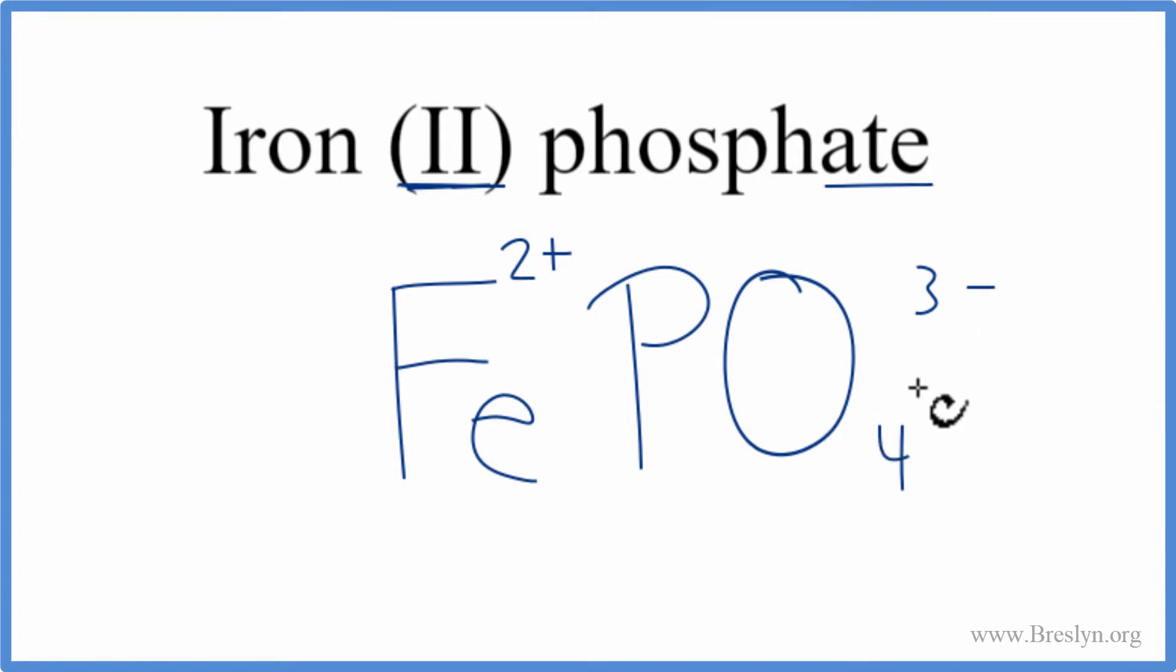These need to add up to zero, give us a net charge of zero, and right now they don't. So we can use something called the crisscross method to make that happen. We can move the 3 here and the 2 over here, and get rid of these.